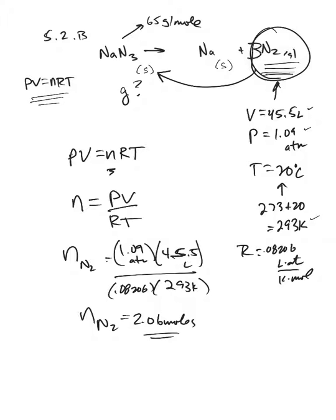How about if I put a 3 there and then put a 2 there and a 2 there? So now it's balanced. So the 2.06 moles of N2 in the airbag is connected to the sodium azide, which has this ratio.